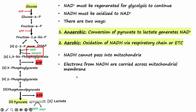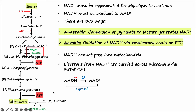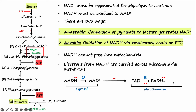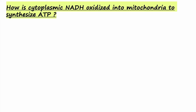To resolve this issue, electrons from NADH are carried across the mitochondrial membrane instead of NADH itself. In the glycerophosphate shuttle, NADH carrying electrons in the cytosol is first oxidized to NAD+ in the cytosol. The electrons are then transported across the mitochondrial membrane and passed on to FAD in the mitochondria, which is reduced to FADH2. This FADH2 then gives up its electrons to the electron transport chain to synthesize ATP.